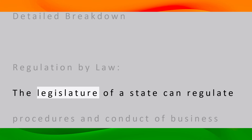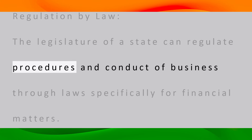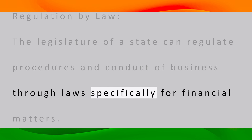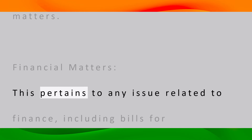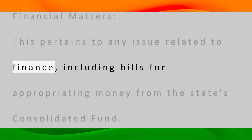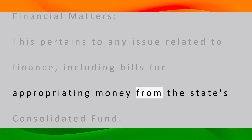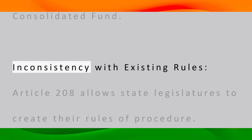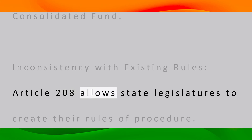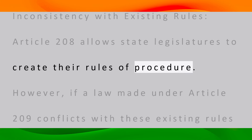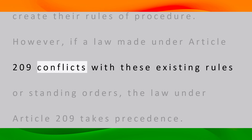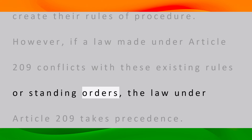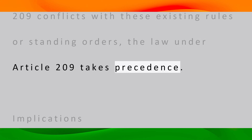The legislature of a state can regulate procedures and conduct of business through laws specifically for financial matters, including bills for appropriating money from the state's Consolidated Fund. Article 208 allows state legislatures to create their rules of procedure; however, if a law made under Article 209 conflicts with these existing rules or standing orders, the law under Article 209 takes precedence.